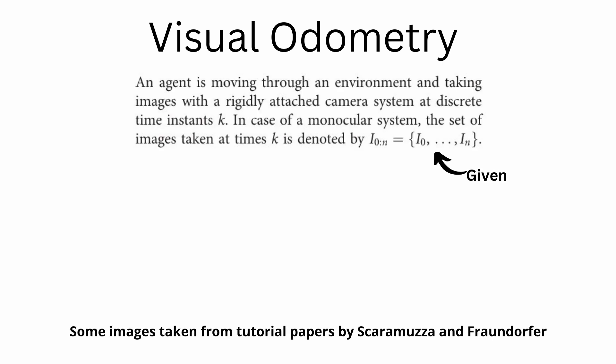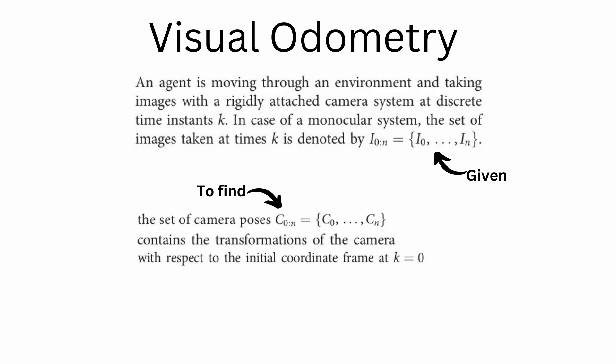Let's start with formulating the problem statement. Given a moving agent that is moving through an environment and taking images with a rigidly attached camera system at discrete time instance k, we wish to find the camera pose at each time instant incrementally. For simplicity, the camera coordinate frame is assumed to be also the agent's coordinate frame, but if it's rigidly attached, you can anyway find the transformation from the camera coordinate frame to any other coordinate frame within the robot.